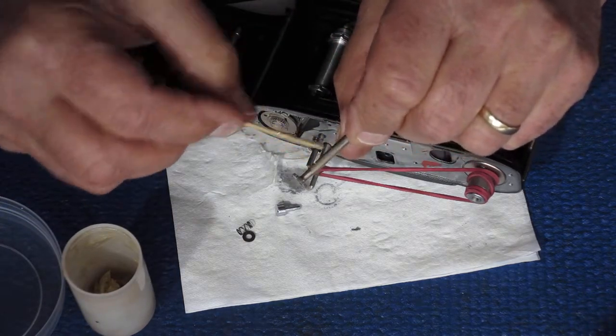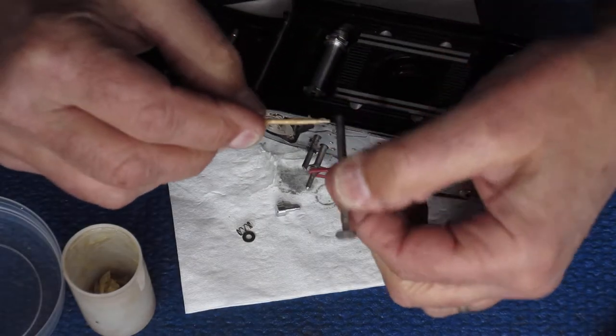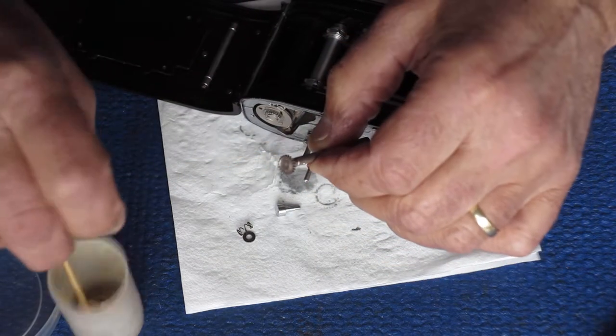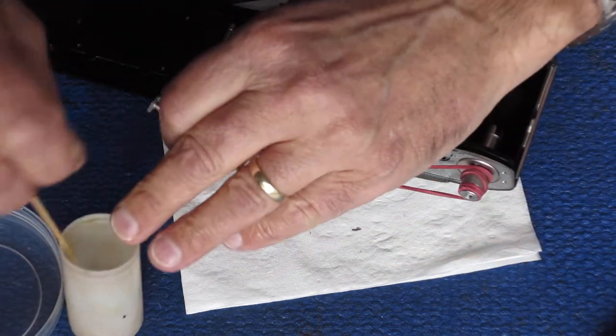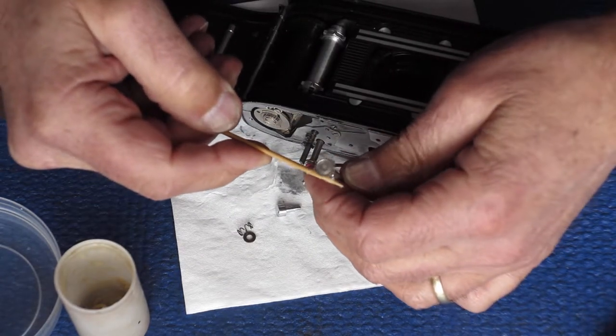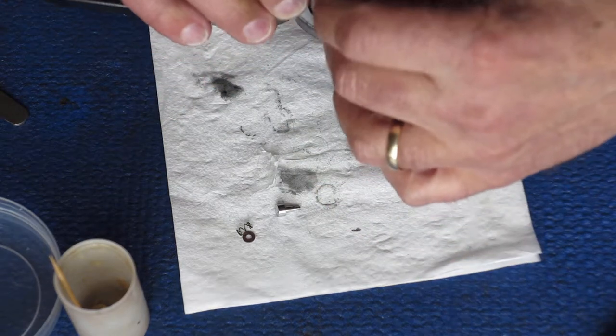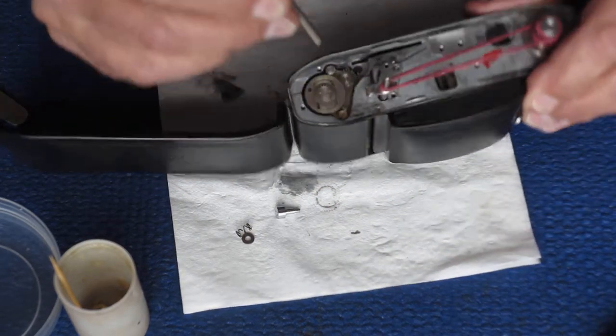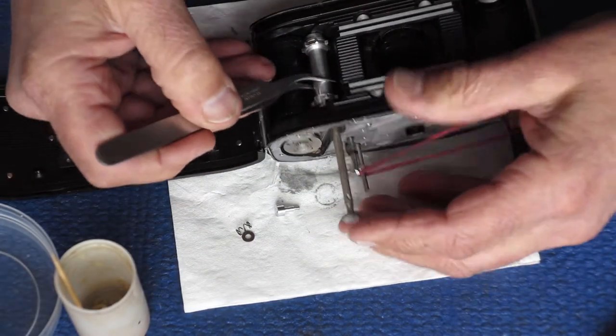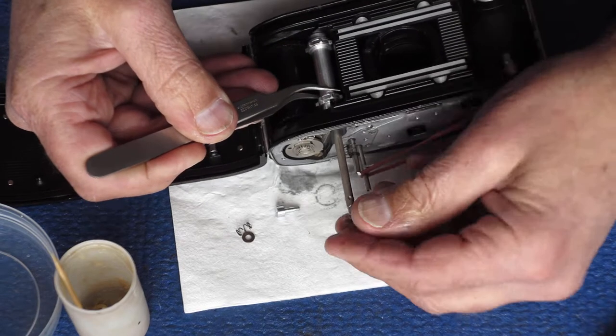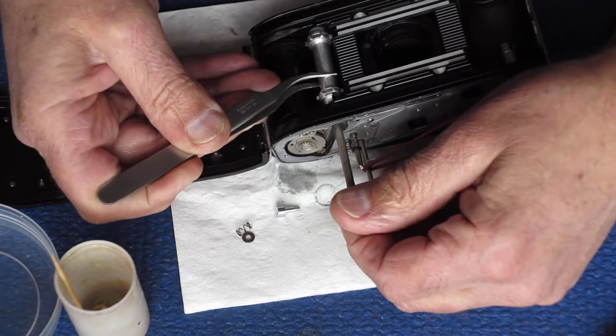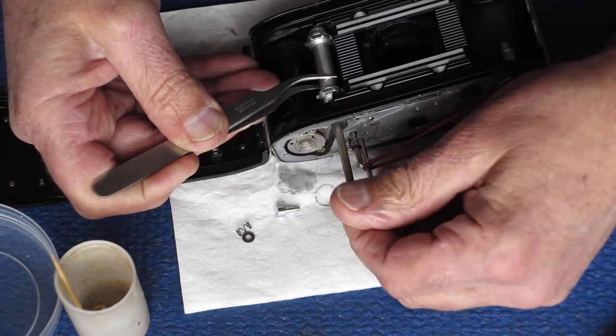A little bit of grease there. That's where the sprocket will revolve on it. A little bit of grease at the bottom. You can see the shiny part there where it revolves and rubs. Normally I'll put a little bit here on the teeth, just for good measure. That slides in from the top. That slides in here. It's reluctant.